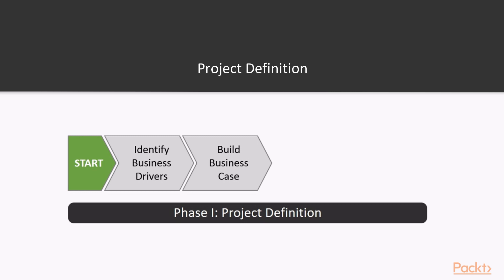Once you have built your business case and validated it, the next stage is to run an assessment. This includes examining your current application landscape so you can understand what applications are being delivered, to whom, and how. Key metrics include which users will use which applications, application usage, whether any applications are being installed with a Windows installer, any application virtualisation or packaging technologies already in use, unsuitable applications for layering, which client operating systems are being used, and delivery methods such as RDSH, XenApp, VDI or physical PCs.